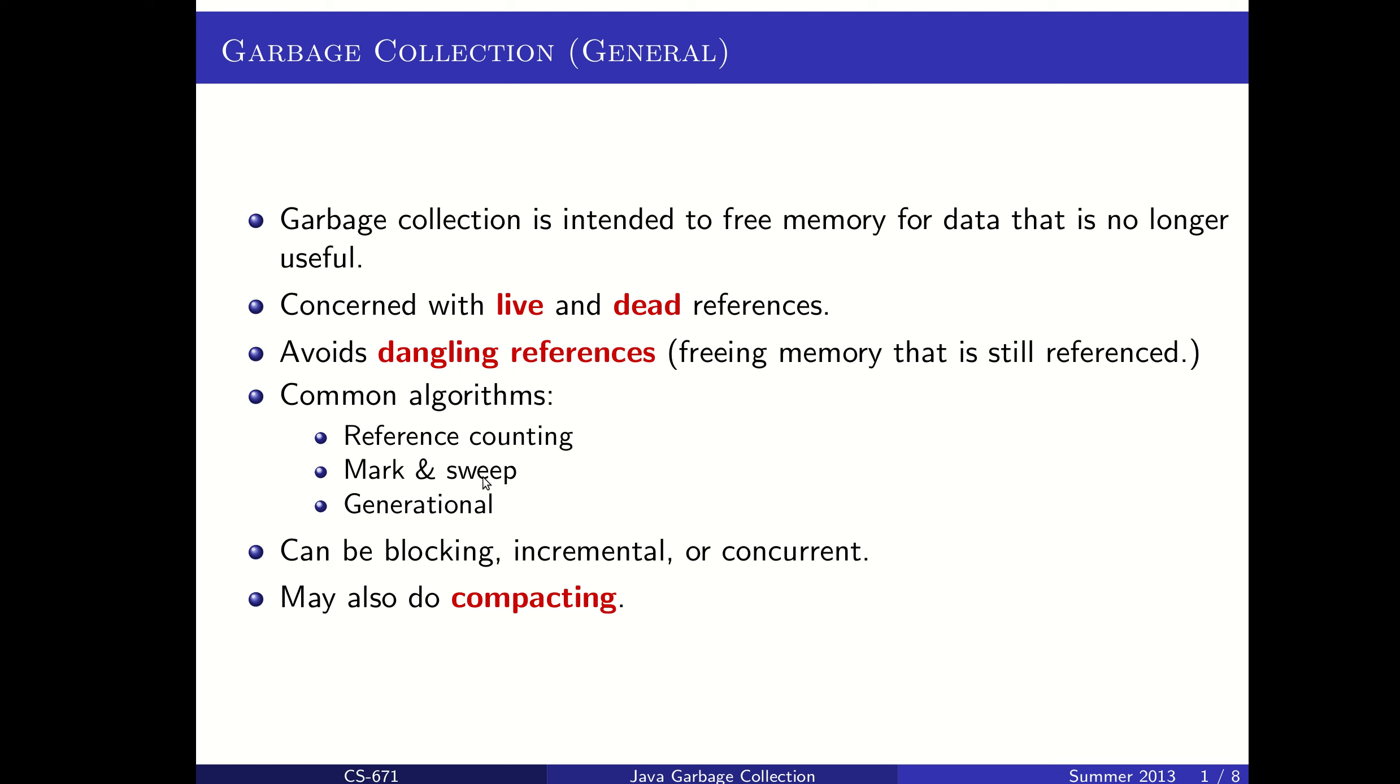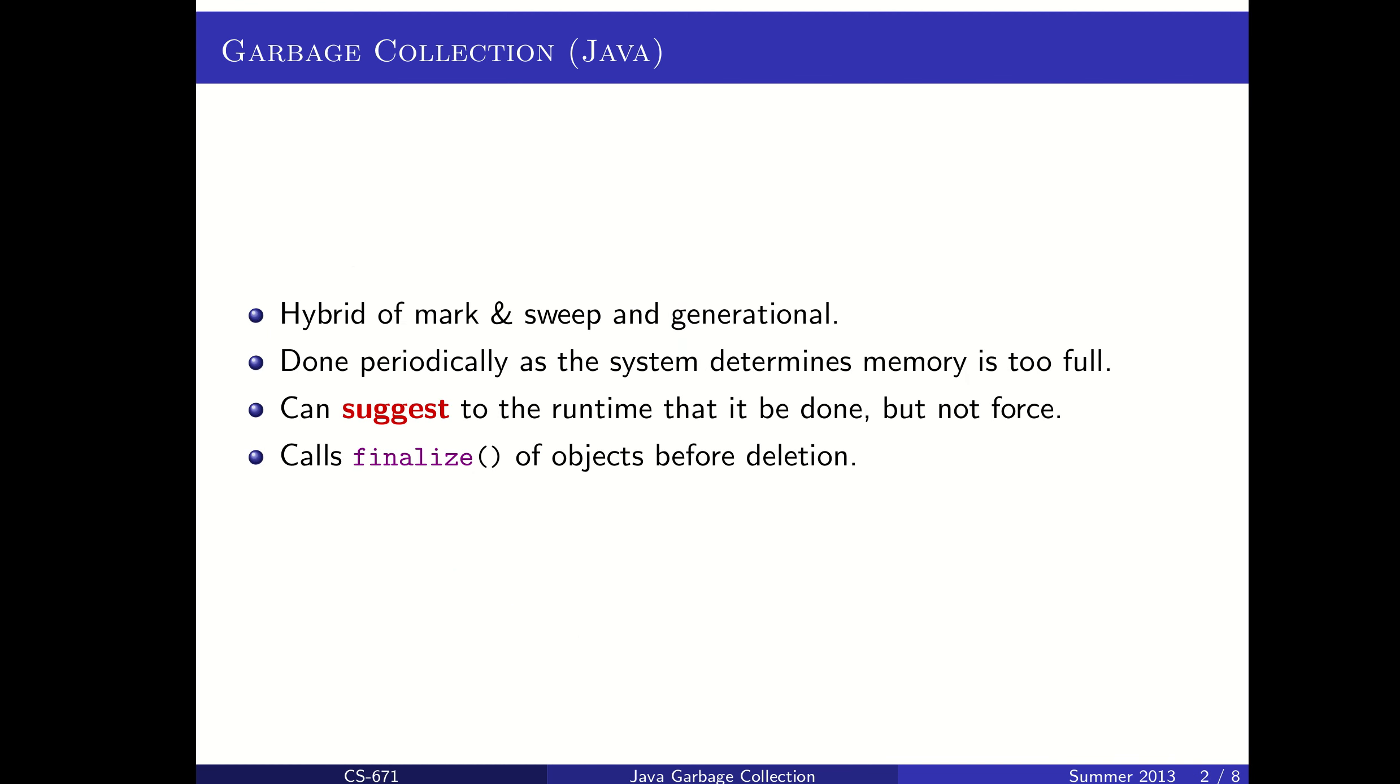When we create a garbage collection scheme, it can be blocking, incremental, or concurrent, meaning it can stop the whole program to do its garbage collection. It can do little bits at a time, or it can be written in a way that it runs in, say, a separate thread and is done concurrently with our program's regular execution. These are all different possibilities for it. And we may also sometimes have schemes that do compacting, trying to sort of smash down any data that can be to create smaller amounts of memory used, even with those things that are alive or that are dead. We won't get into that too much.